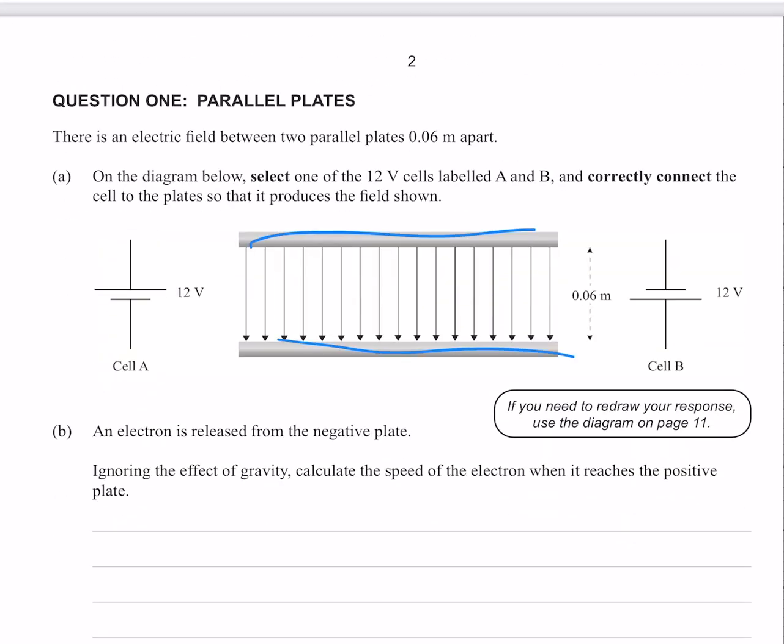Two parallel plates. On the diagram below, select one of the 12 volt cells labelled A and B, and correctly connect the cell to the plate so it produces the field shown below. Well the field lines always point towards negative, and on a power source the long one is always positive and the short one is negative, so we just connect them up like so. Job done.